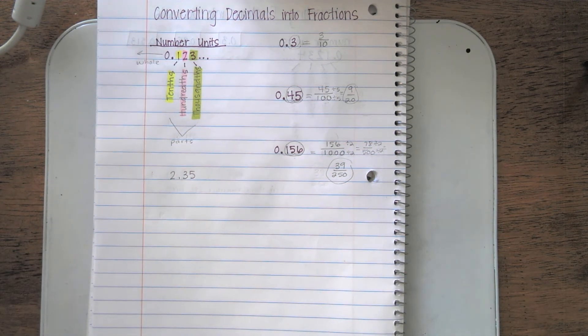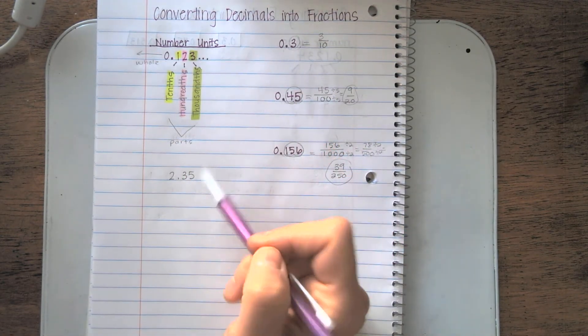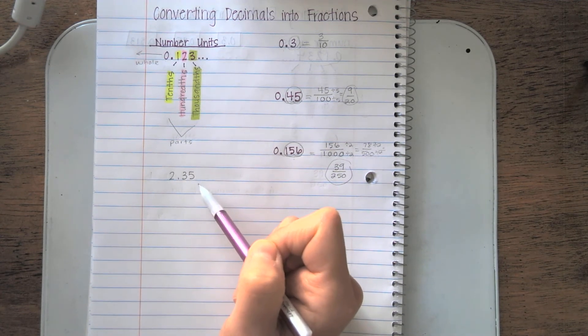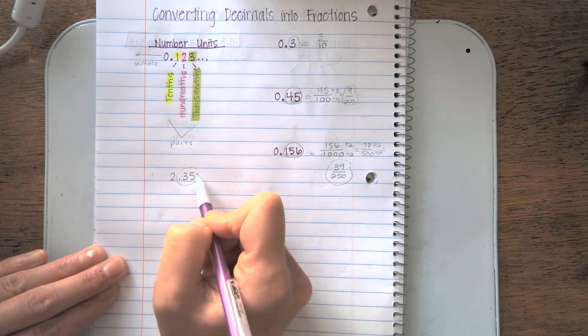When that happens, don't worry. We're still going to follow the same format we used with converting our decimals. But this time, we'll just have that 2 out in front. If you see a problem like this, the best way to tackle it is first, let's deal with the decimal and all the numbers to the right. I see there are two units to the right. That is tenths, hundredths.